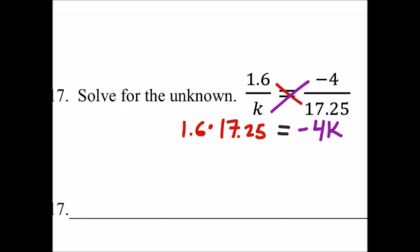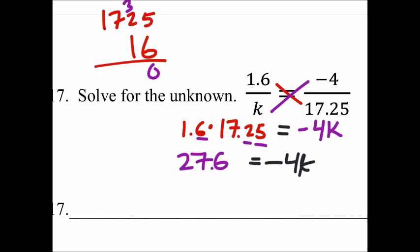So we got 1.6 times 17.25, let's go ahead and multiply those out. Just remember we need three decimal places. So I'm going to get a 30... alright.